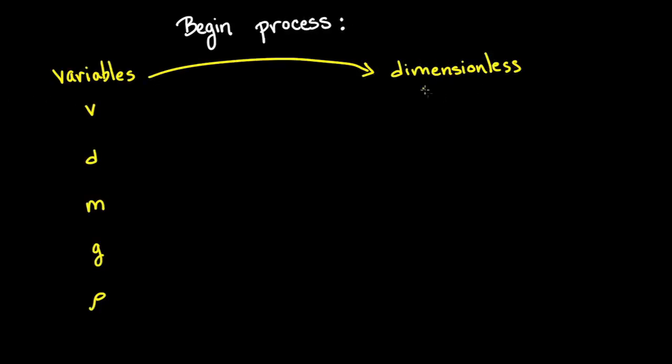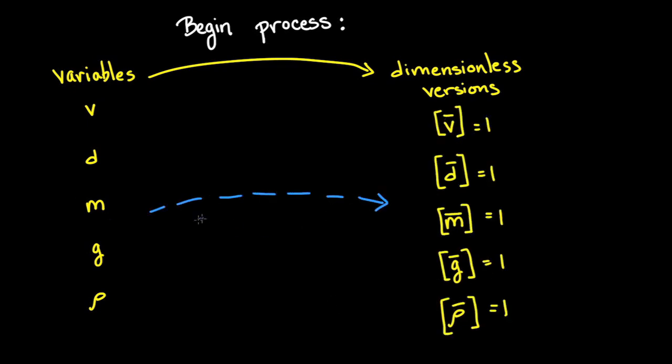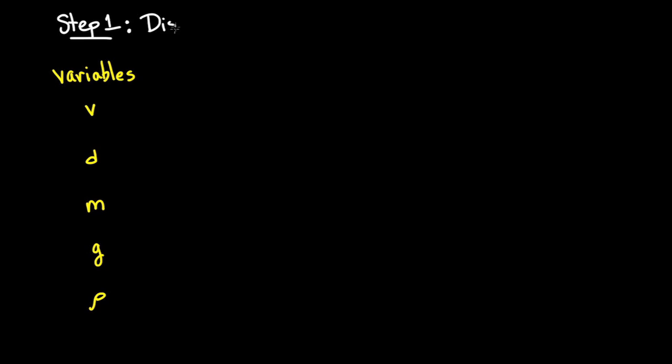We begin this process by creating dimensionless versions of the variables in our system. We create these dimensionless expressions out of the variables in our system so we don't introduce any new physical parameters. The first step is to take our list of variables and distill them down to their fundamental dimensions. Remember, our fundamental dimensions are length, mass, and time.